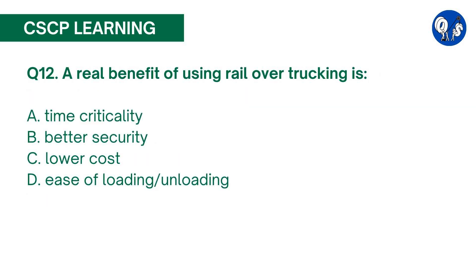Question number 12. A real benefit of using rail over trucking is: A. Time Criticality, B. Better Security, C. Lower Cost, D. Ease of Loading/Unloading. The correct answer is C. The primary reason for using rail for durable loads is that rail costs about one-tenth the cost per tonne mile of trucking. As a result, rail is favored for low-cost heavy loads.